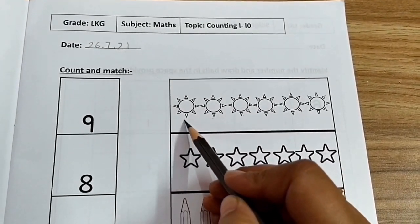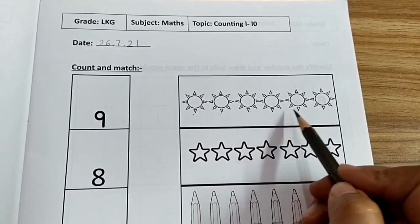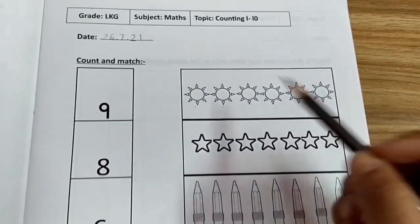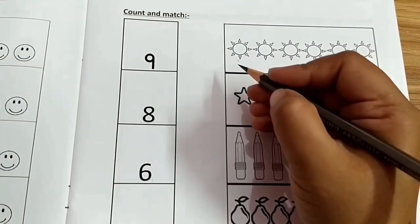Let's count the suns. One, two, three, four, five, six. Where is number six? Here is number six. Let's match.